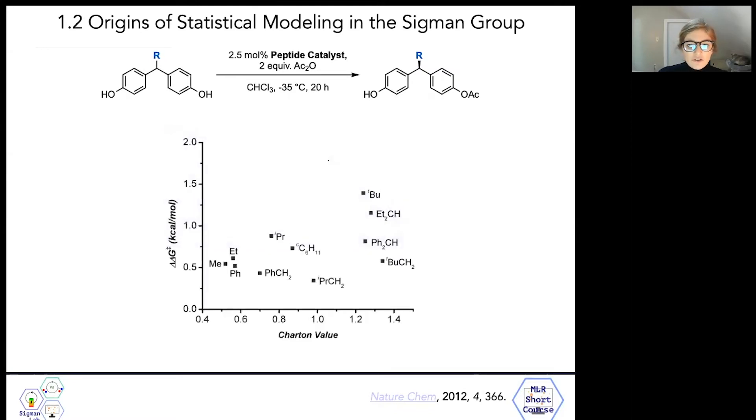In their investigation, Harper and Bess found that Charton parameters were ineffective at describing the steric effects that are important for selectivity in this desymmetrization reaction. It's obvious from looking at this plot that there's no correlation between Charton values and observed enantiomeric ratios. But if you look closely at Harper and Bess's report, you'll find that they credit this poor performance of Charton values to the fact that the parameters are based on a spherical model.